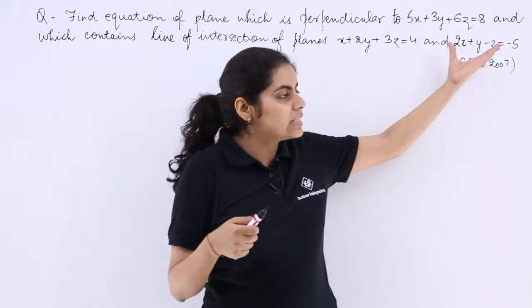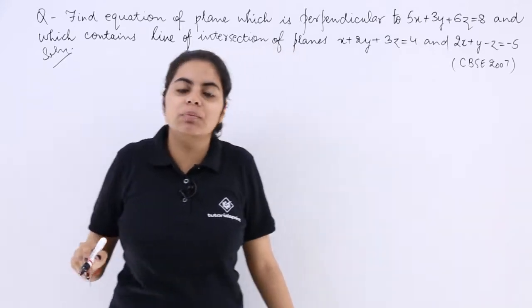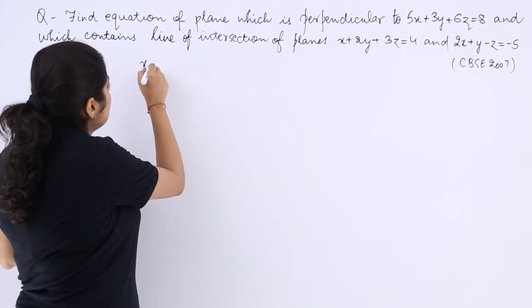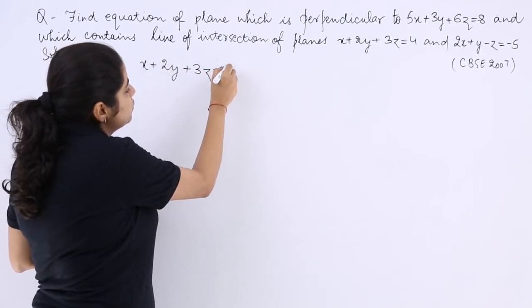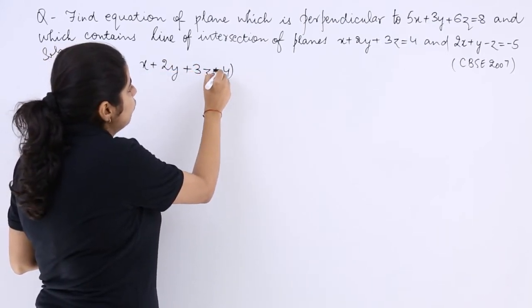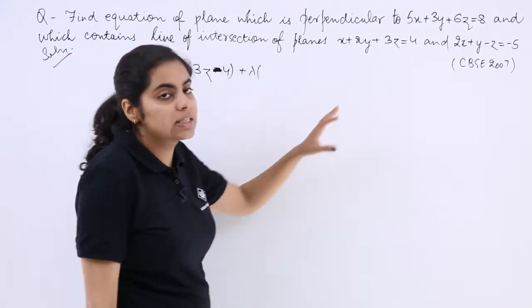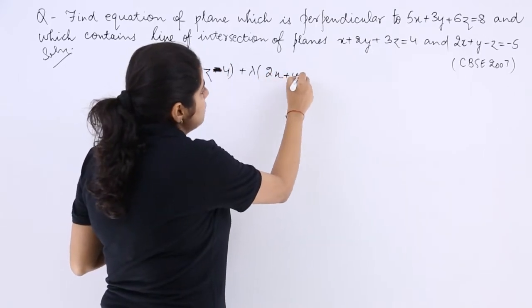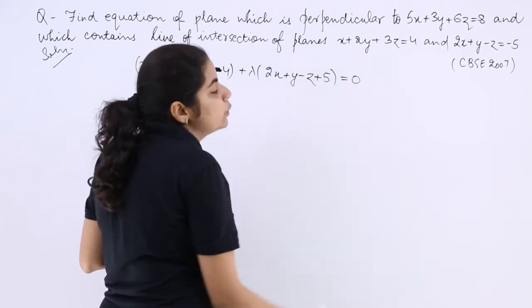The first and the second are given. I write here solution. The equation of the plane which is required from the intersection of these is given as x plus 2y plus 3z minus 4 plus lambda times equation number 2, which is 2x plus y minus z plus 5, and it is equal to 0.